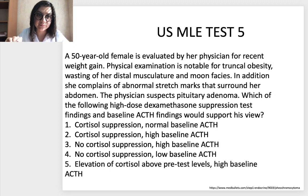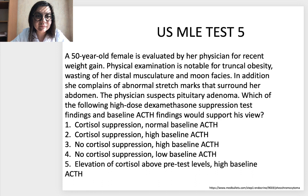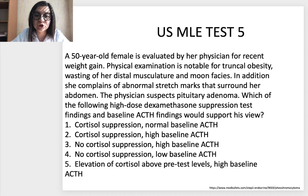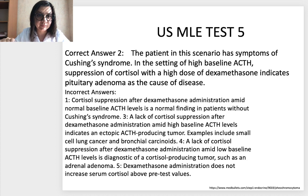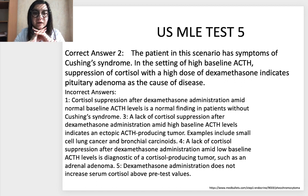Test 5. A 50-year-old female is evaluated for recent weight gain. Physical examination is notable for truncal obesity, wasting of distal musculature, and moon facies. In addition, she complains of abnormal stretch marks surrounding her abdomen. The physician suspects a pituitary adenoma. Which high-dose dexamethasone suppression test findings and baseline ACTH findings would support his view? Correct answer 2. The patient has symptoms of Cushing syndrome with high baseline ACTH and suppression of cortisol with high-dose dexamethasone, indicating pituitary adenoma as the cause.